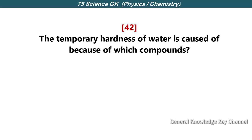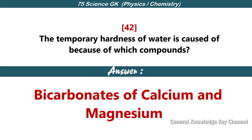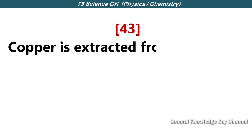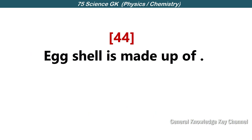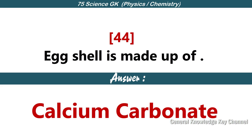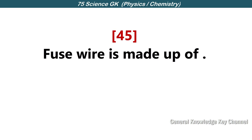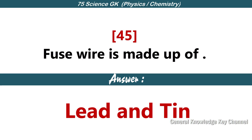The temporary hardness of water is caused by bicarbonates of calcium and magnesium. Copper is extracted from which ore? Copper pyrite. Egg shell is made up of calcium carbonate. Fuse wire is made up of lead and tin.